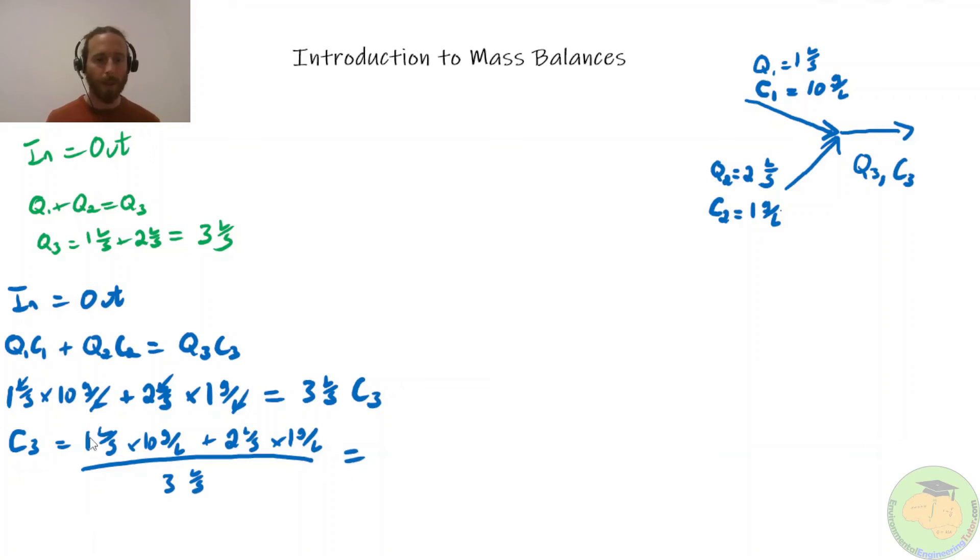And so let's simplify this a bit. 1 times 10, that's 10 grams per second, plus 2 grams per second over 3 liters per second equals 12 over 3. So the seconds cancel out because these will flip on top. So you'll have grams per second times seconds per liter. So seconds cancel out and you have grams per liter. 12 over 3 grams per liter equals 4 grams per liter.